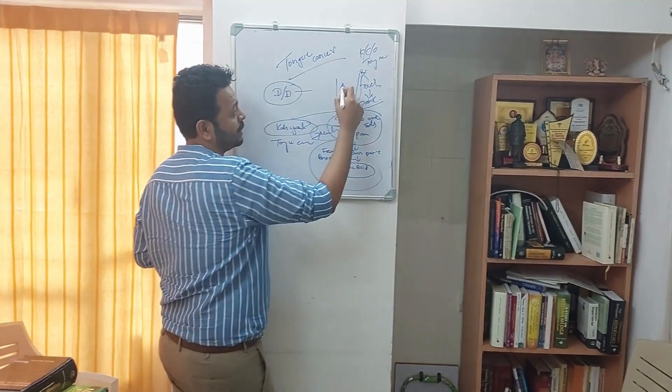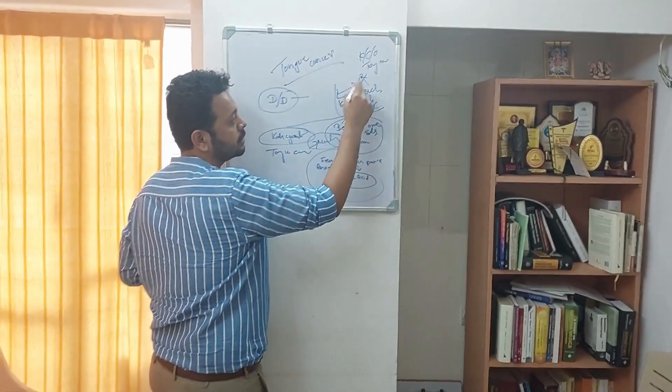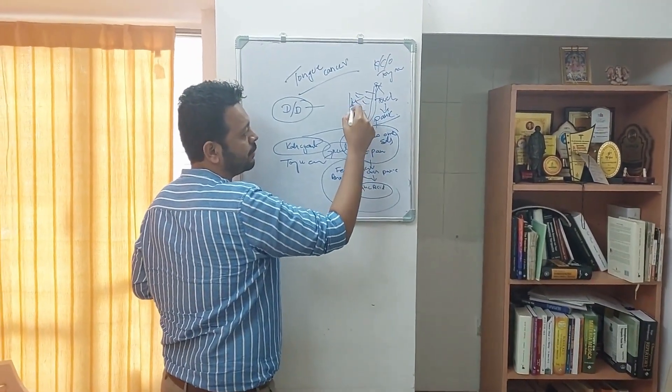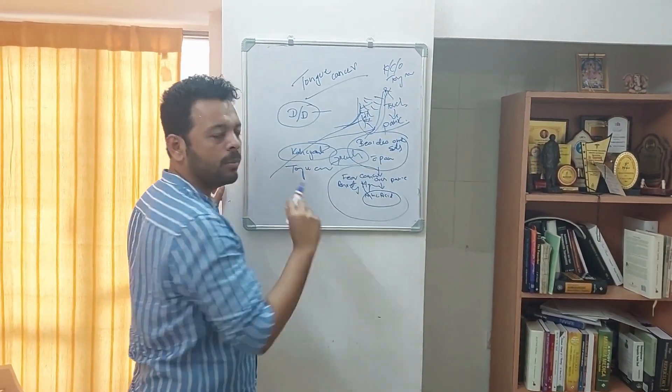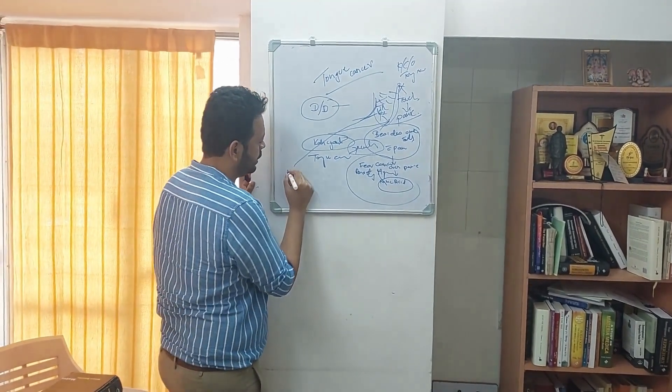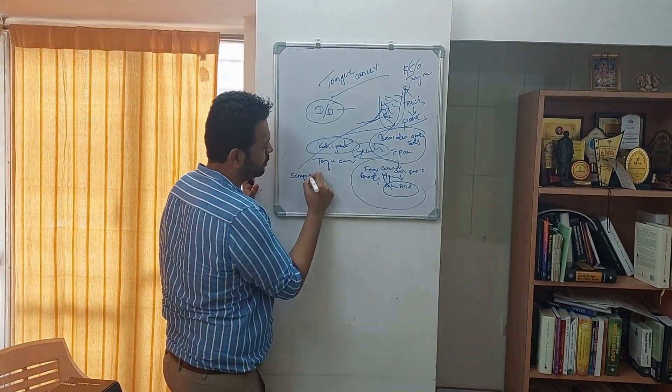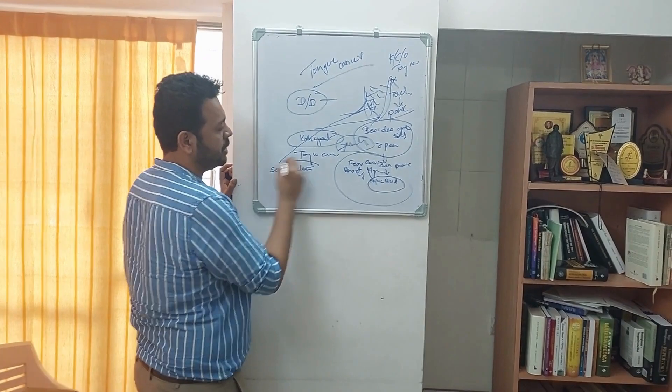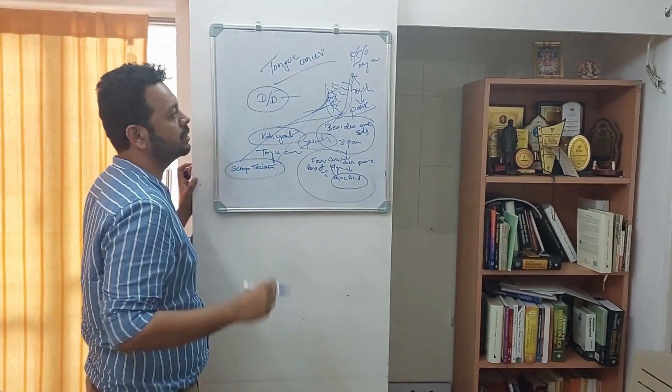Many of the tongue related pathology there may be many ulcers and with that lot of bleeding. And we normally think about mercury salts but another very important remedy is the remedy semperiverum tectorum. Very important for this bleeding with the tongue cancer.